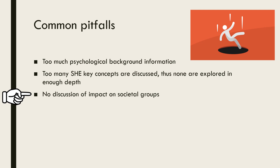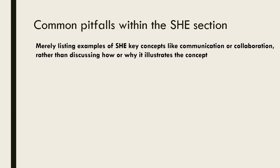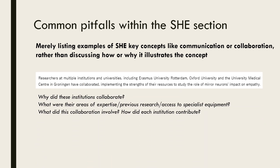Let's have a closer look at common pitfalls within the SHE section using some exemplars. A really common mistake is that students merely list examples of SHE concepts rather than discussing how or why it illustrates that concept. For example, a student may list some institutions that have collaborated but not tell us anything about why they collaborated, what the collaboration involved, how each institution contributed, or what areas of expertise or specialist equipment made the collaboration necessary.